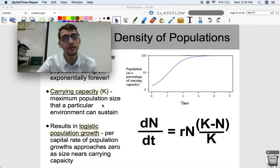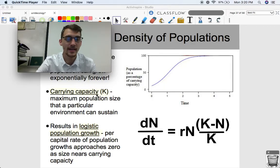It's the maximum population size that a particular environment can sustain. That is called the carrying capacity, and it is denoted mathematically with the letter K. K is representing the maximum population size that a particular environment can sustain.